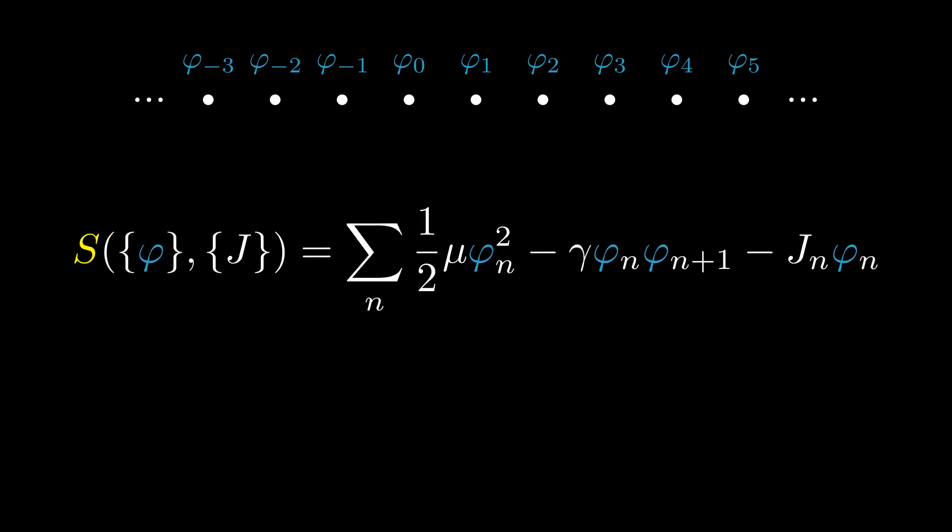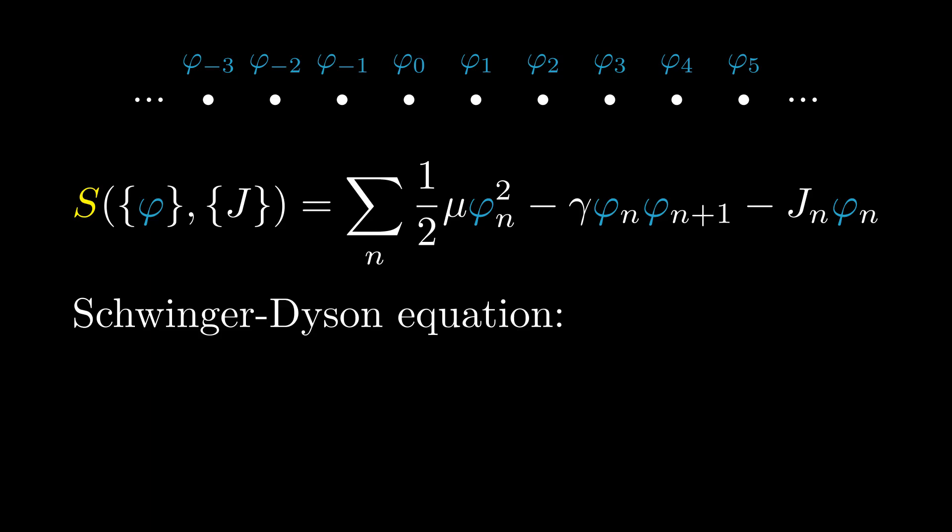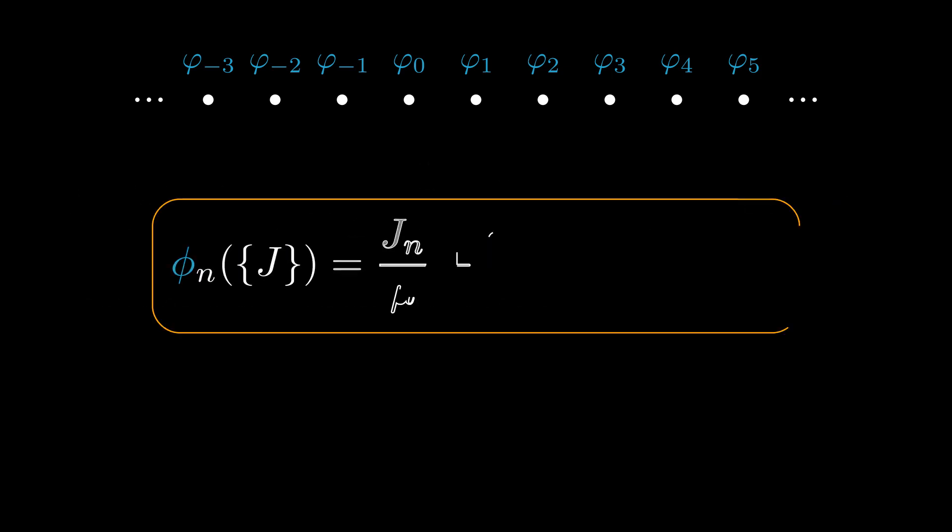Now that we have our action, let us use the Schwinger-Dyson equation to find an expression for the expectation value of each phi n. The Schwinger-Dyson equation tells us to take the derivative of our action with respect to phi n, then replace each phi n with the expectation value of phi n in the presence of sources j, plus h-bar times the derivative with respect to jn, and then have it act on the 1 function. The result is the equation right here, which gives the dependence of our quantum field labeled n on the quantum fields labeled n plus 1 and n minus 1. This equation is therefore a nice starting point to derive a propagator function in our theory.